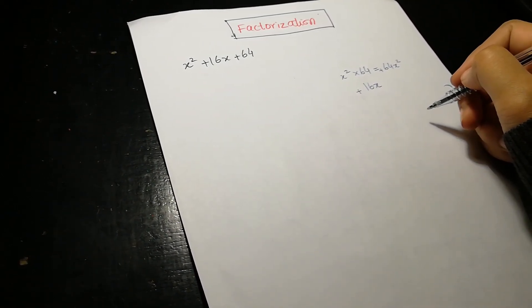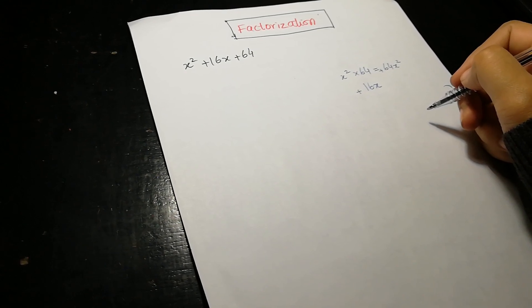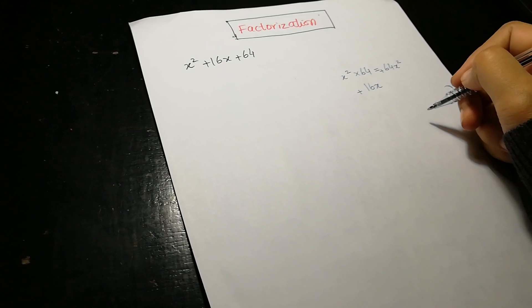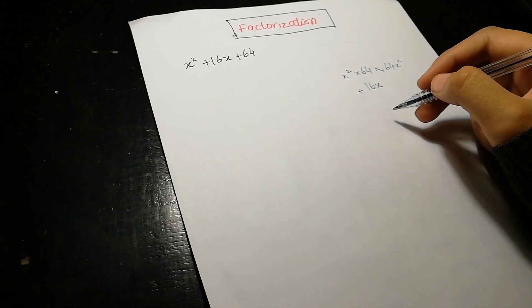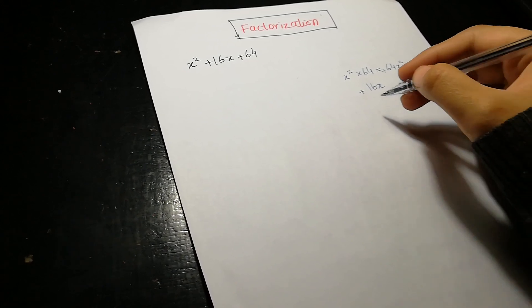So the next step is we have to find two terms. When we multiply them we get 64x square, or when we add or subtract them we get positive 16x. As we know, 64 is the square of 8.